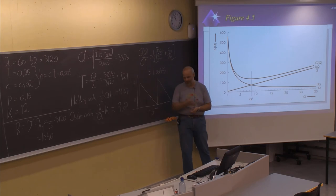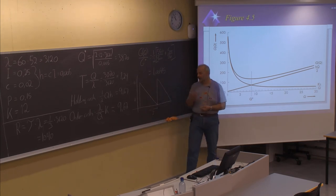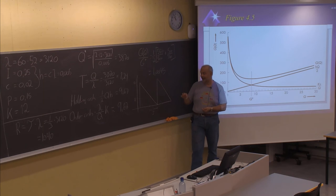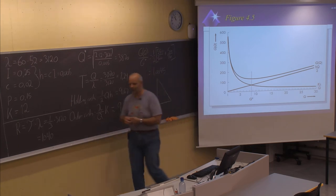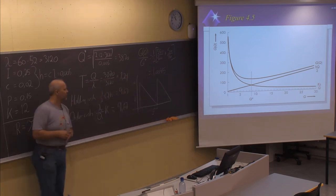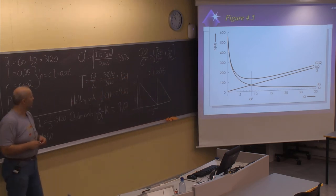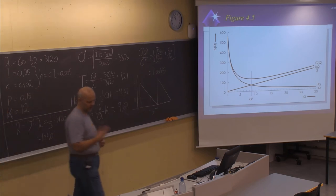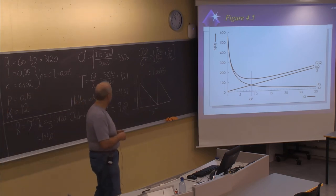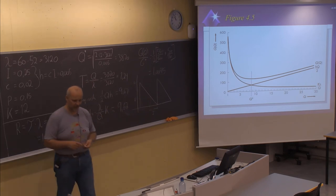Often the lead time may be variable — you don't know exactly how long you'll have to wait. In such cases, we need to adjust for stochasticity, and we need to modify these models when parameter values are uncertain. This will be covered in more advanced inventory models.